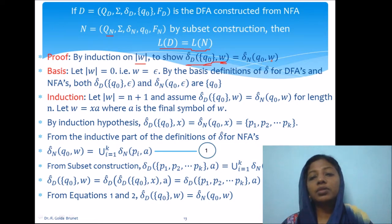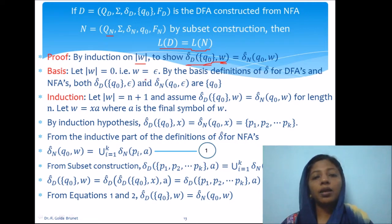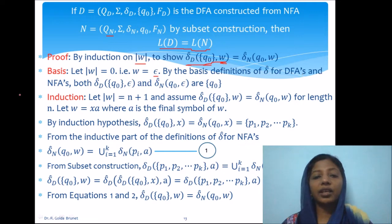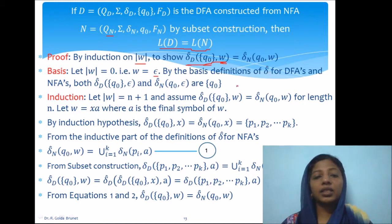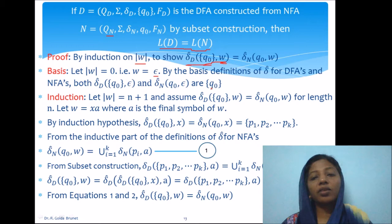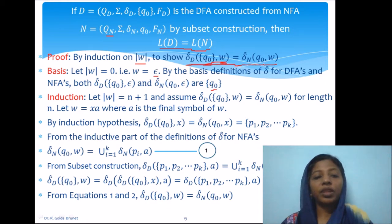For the basis case, the length of the string is 0, so W is the null string. By the base definition of delta-cap for both DFA and NFA — the extended transition function for strings — when we start from Q0 and accept the null string, we end up with the same state Q0 in both cases. So both are equal, and this is established.